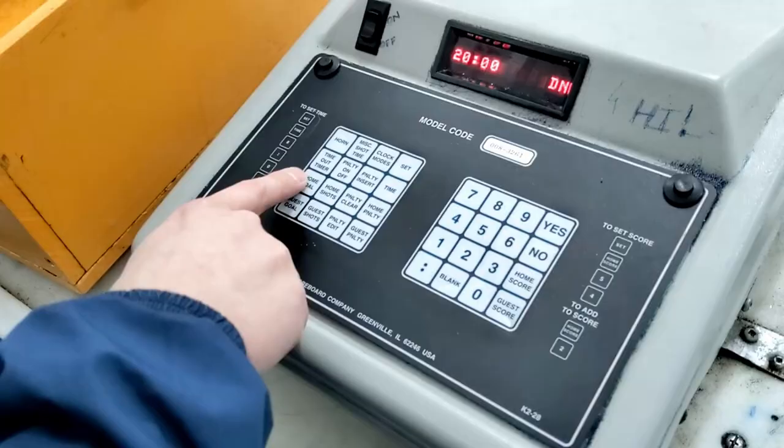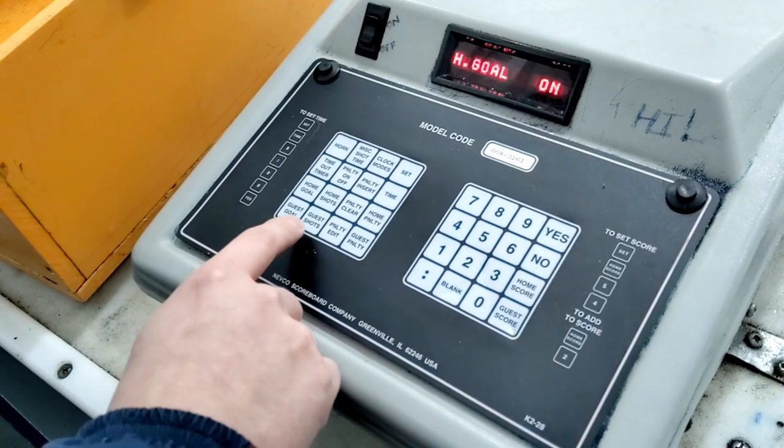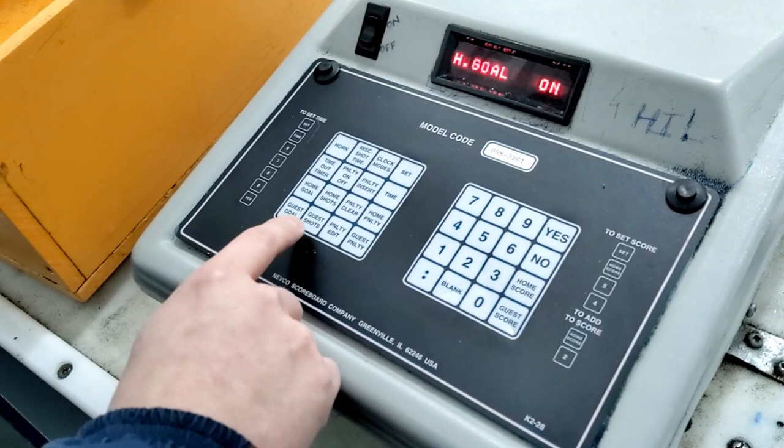To add a goal, home goal - no, home score, add one. Now we're at one. You can keep adding one. If you mess up, you have to go set home score to five. That's it, that's pretty much it.